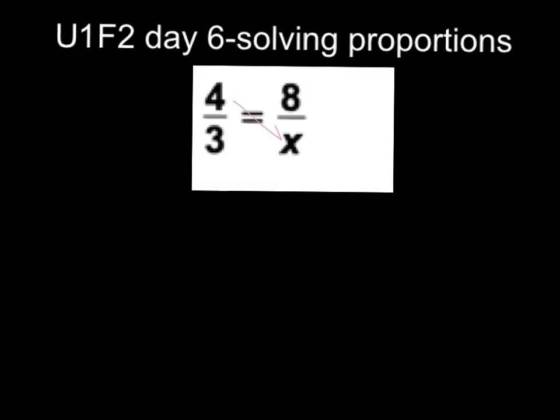So please make sure you show your steps. So we're going to take 4 times x, and we're going to get 4x. Bring down my equal sign, and we're going to take 3 times 8, and we're going to get 24. The same as one-step equations, we're going to divide by 4 because it's a multiplication problem. Those cancel the 1s, and x equals 6.